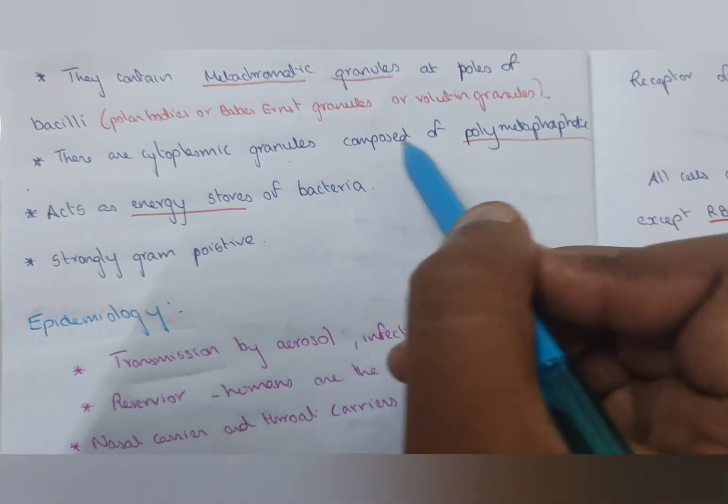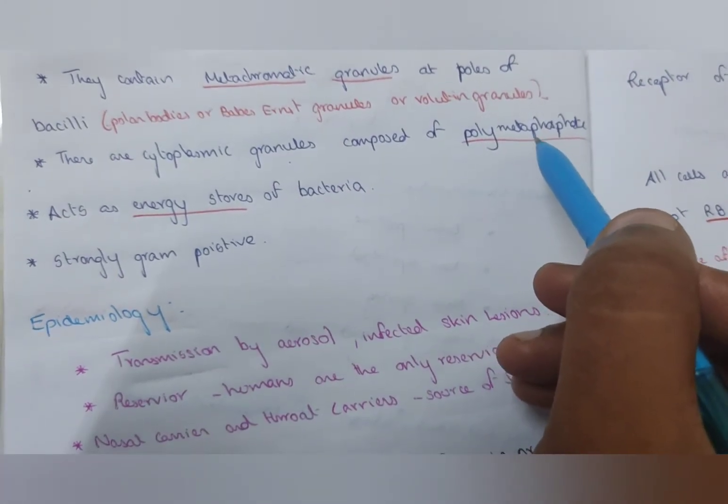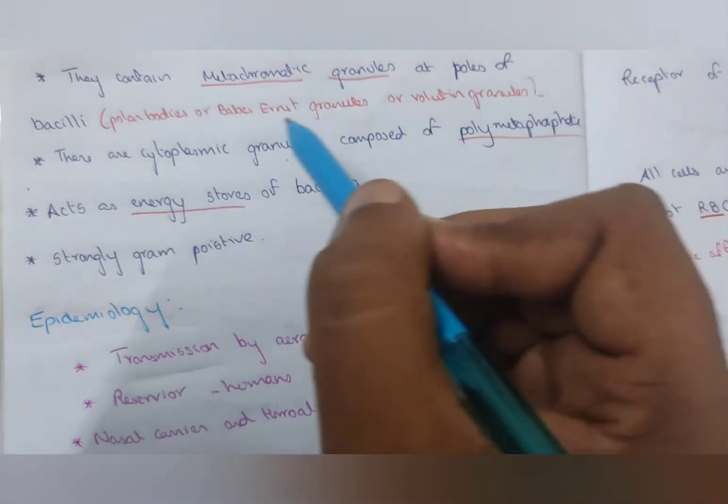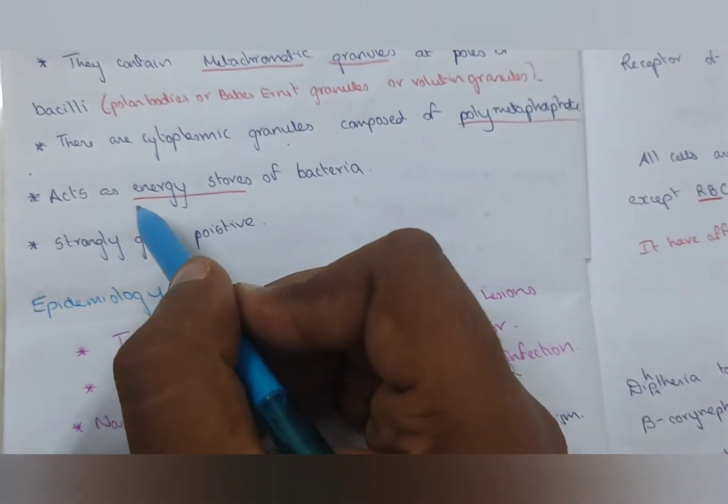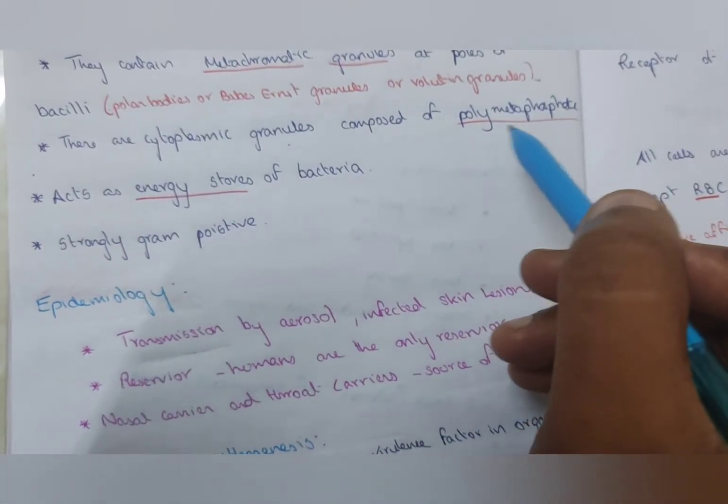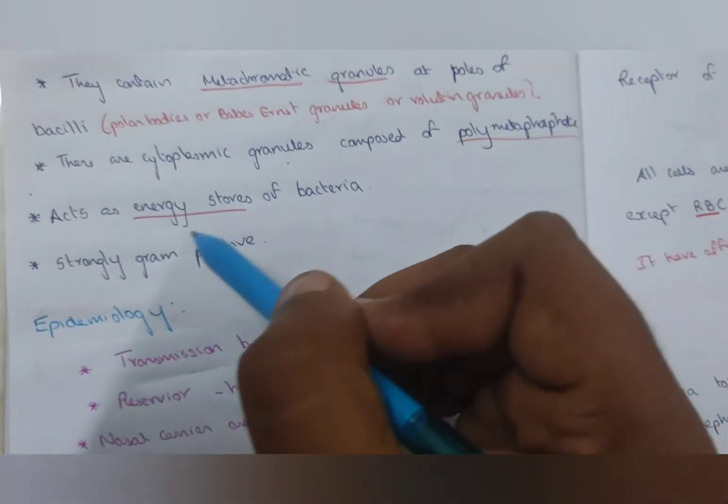The cytoplasmic granules are composed of polymetaphosphate, an energy store of the bacteria. This polymetaphosphate is an energy store of the bacteria. They are strongly gram-positive.